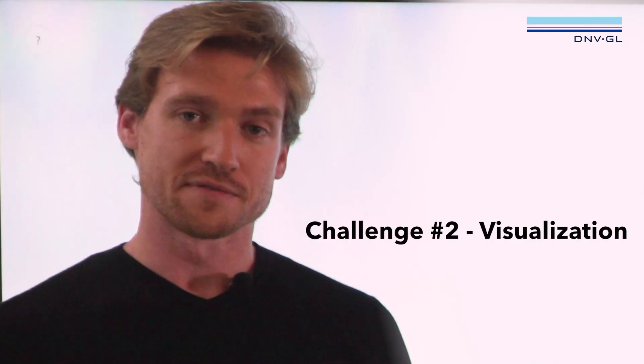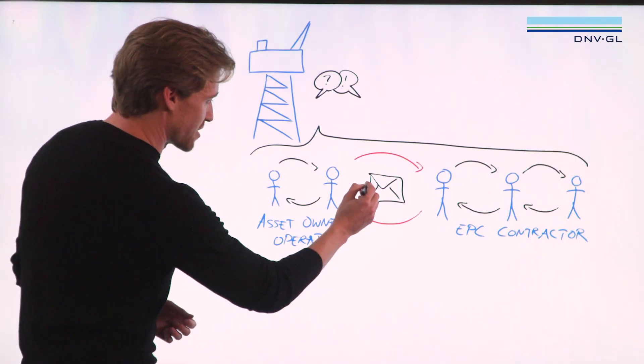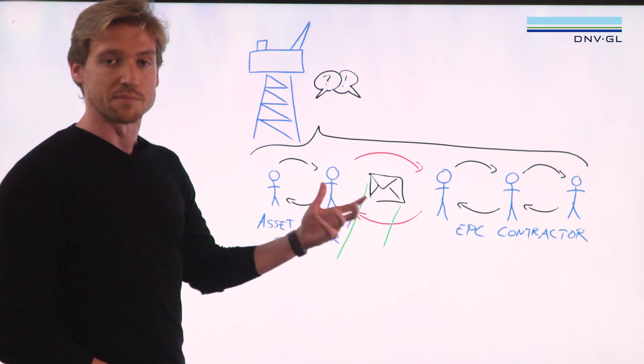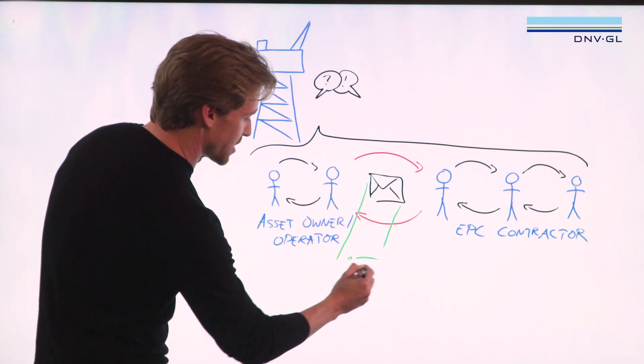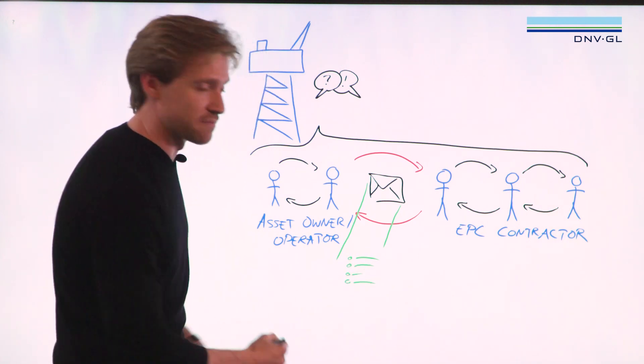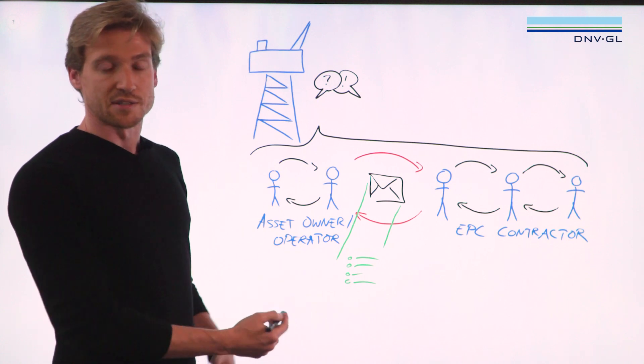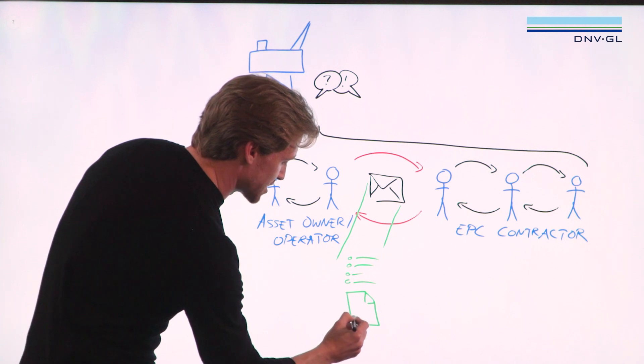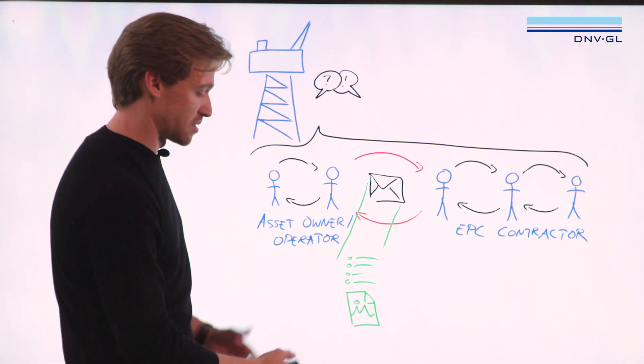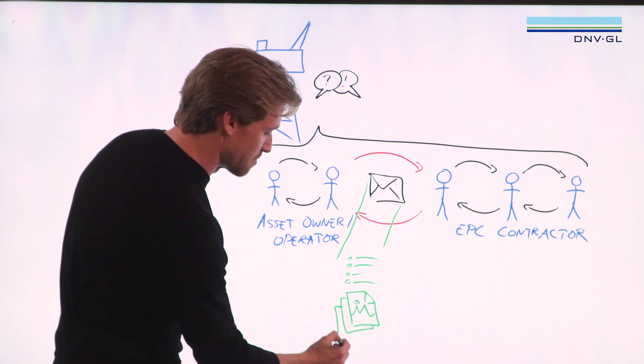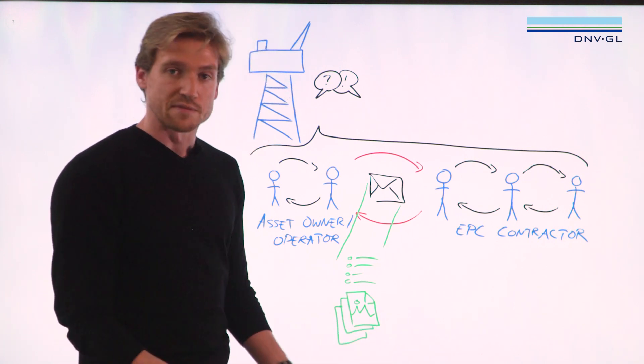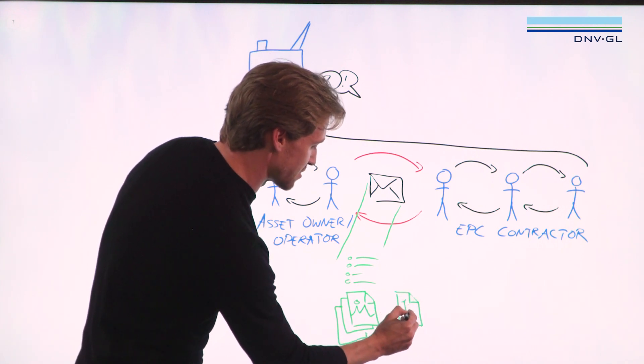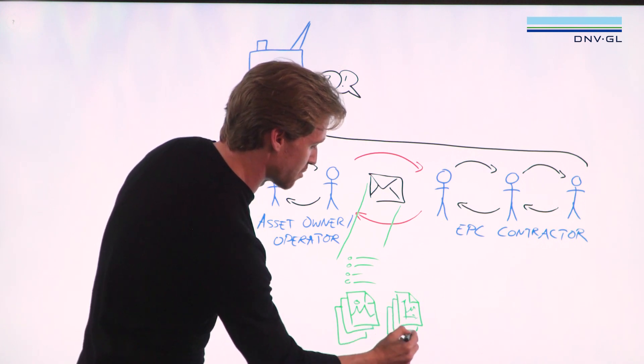The second challenge we're trying to solve is visualization. What I mean by that and why it is important, it's interesting to take a closer look at what kind of information is being passed around in those emails. Typically you find of course a bunch of text written in the emails, but it's not only that text, it's also file attachments that we typically send around. So for example, those files may be drawings, and it's not only one file, these are typically many drawings.